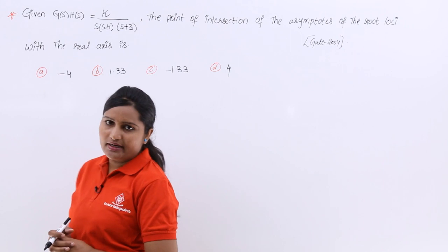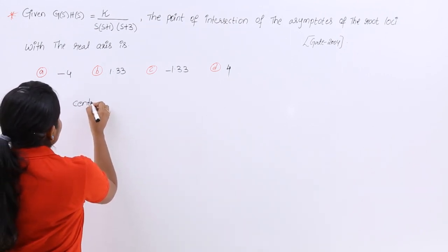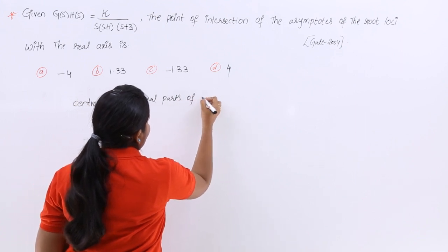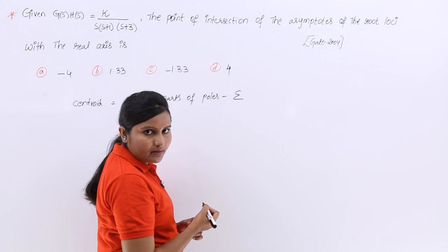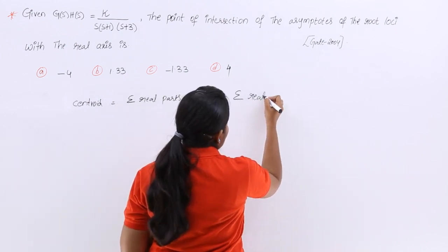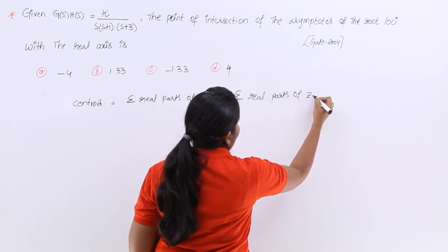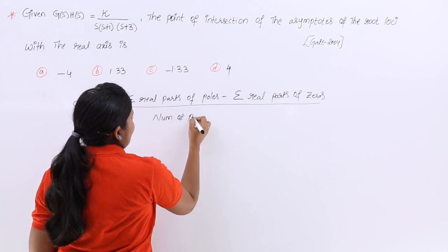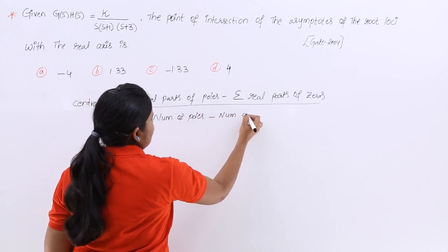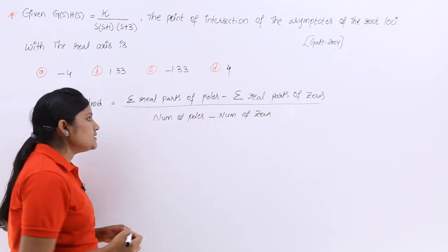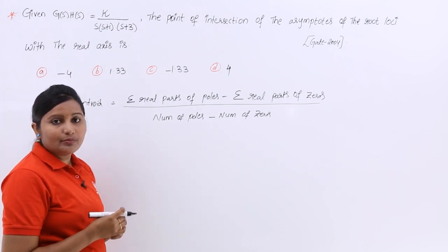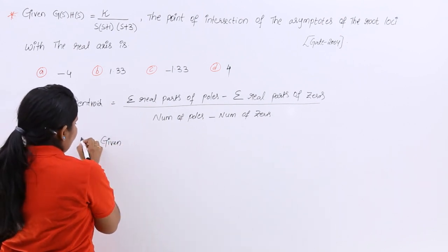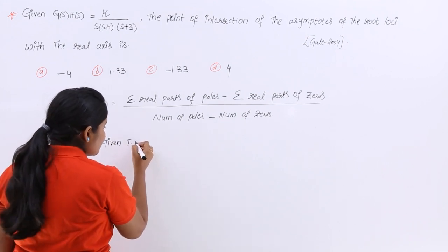We have a formula to calculate the centroid. Centroid equals the sum of real parts of poles minus the sum of real parts of zeros, divided by the number of poles minus the number of zeros. We get the pole and zero information from the given open loop transfer function.